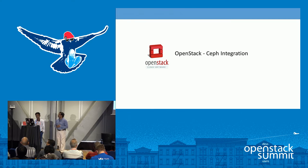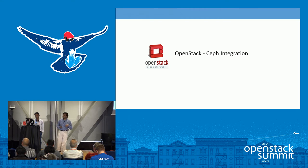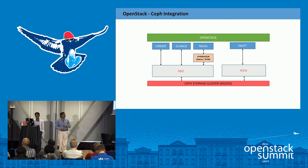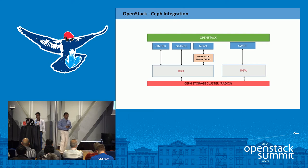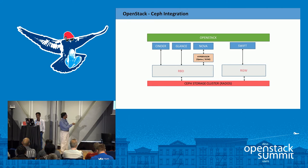Now I will talk about the OpenStack-Ceph integration — what are the components on the OpenStack side, what are the Ceph components, and how both talk to each other. This is a typical diagram of OpenStack. It has Cinder, Glance, Nova, and other components. Cinder is the OpenStack block storage service, which supports persistent block storage for users, and it talks to the Rados RBD, then everything comes back to Rados.